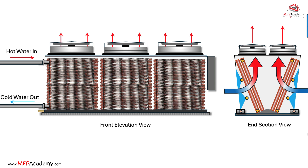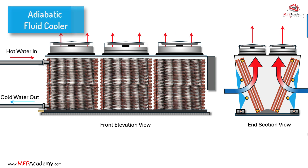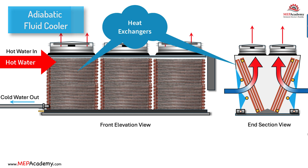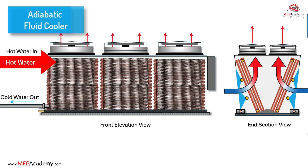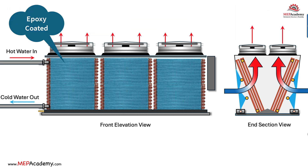Here is how the adiabatic fluid cooler works. The hot water flows into the heat exchanger, which consists of coils of tubes surrounded by fins. As the hot water flows through the tubes, heat is transferred to the coil surface and fins of the heat exchanger. The heat exchanger can be provided with an epoxy coating to increase corrosion resistance without sacrificing unit capacity.